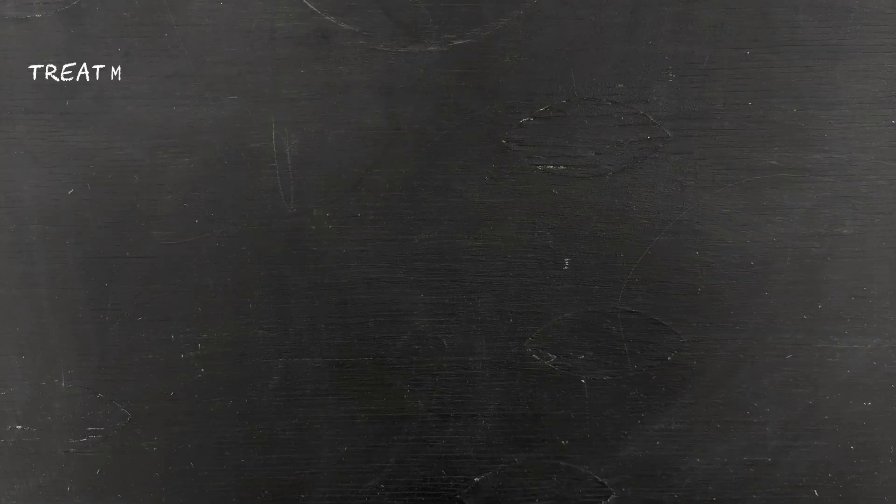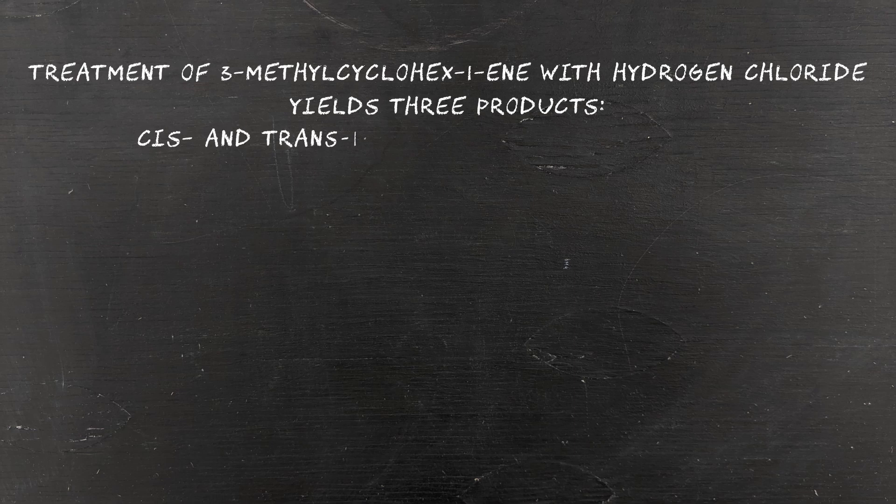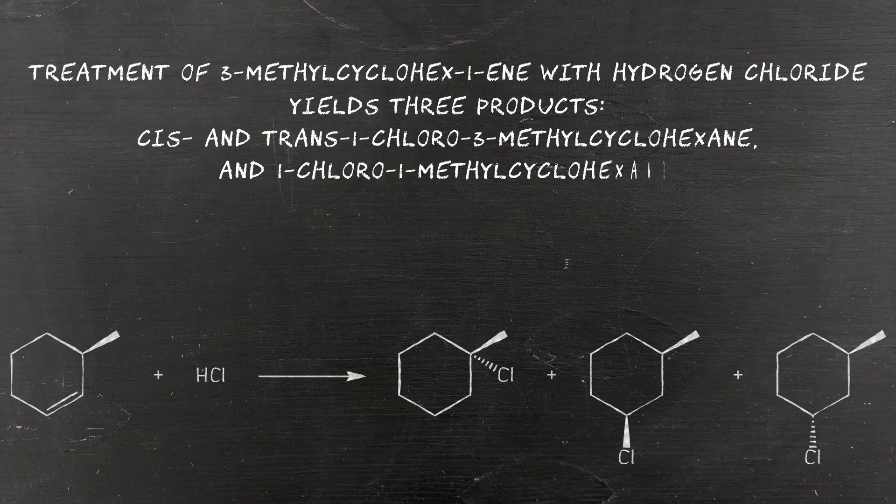Now I mentioned way back at the start of the video that the reaction conditions can also have an effect on the products formed, and this is highlighted by a very similar question that also pops up in undergraduate organic chemistry. Treatment of 3-methylcyclohex-1-ene with hydrogen chloride yields three products: cis and trans 1-chloro-3-methylcyclohexane, and 1-chloro-1-methylcyclohexane. Draw a mechanism to explain this result.